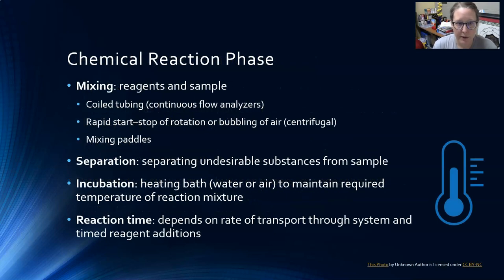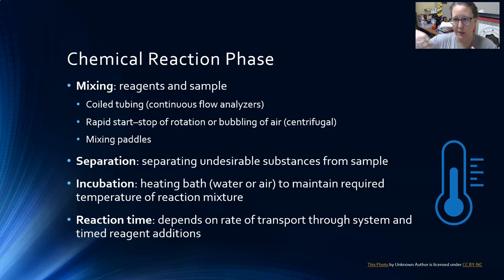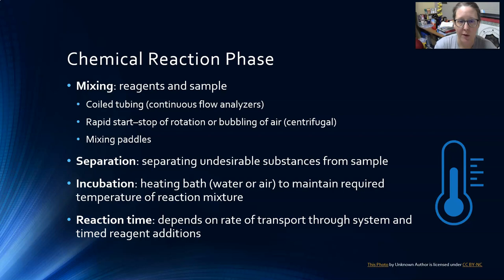Next is the chemical reaction phase. First is mixing the reagents and the sample. In large analyzers there are probes dealing with samples and probes dealing with reagents, adding things to reaction vessels or cuvettes. There are different ways reagents and samples can be mixed depending on the system. In older continuous flow analyzers, coil tubing can be used to mix them.